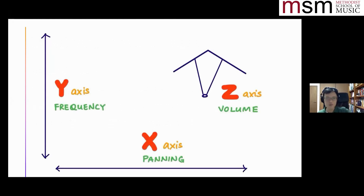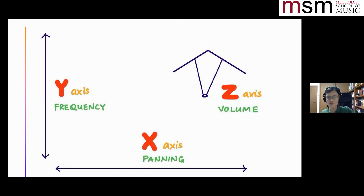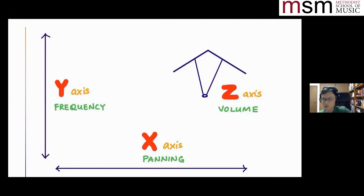Here is a diagrammatic visualization I drew myself. The movement of sounds along the Y axis correlates to frequency or pitch — higher pitch, higher on the Y axis. The X axis is panning — movement of sounds from left to right. And the Z axis is volume — the louder the track or instrument, the closer to the front it will be. The softer it is, the closer to the back.